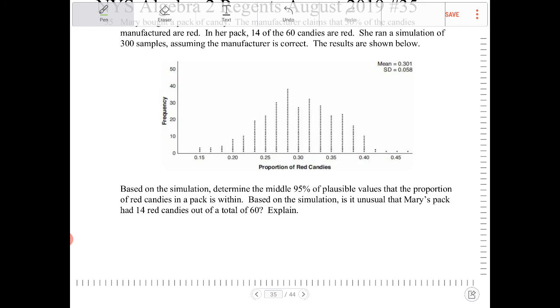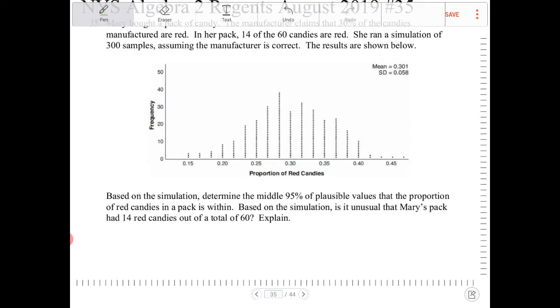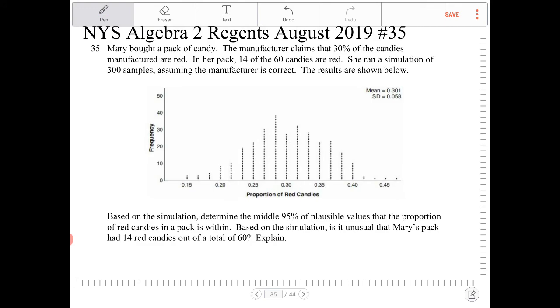So, based on the simulation, determine the middle 95% of plausible values that the proportion of red candies in a pack is within. Based on the simulation, is it unusual that Mary's pack had 14 red candies out of a total of 60? Explain. Alright, so we're going to construct a 95% confidence interval. And what that means is we want to find all the percentages of candies that are red that are within two standard deviations from the mean.